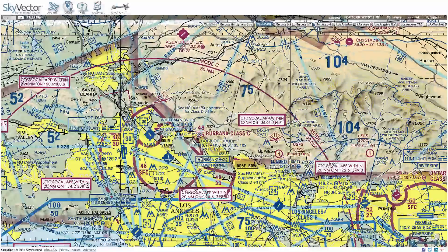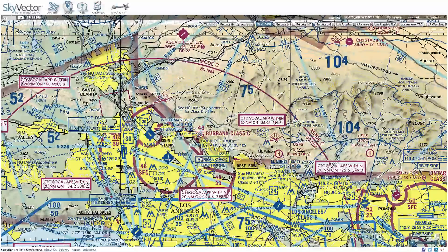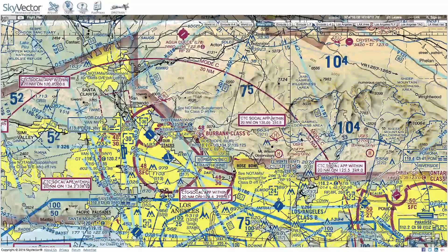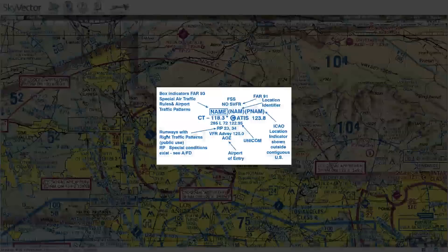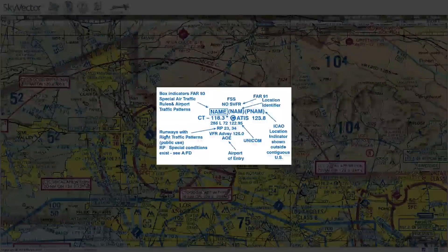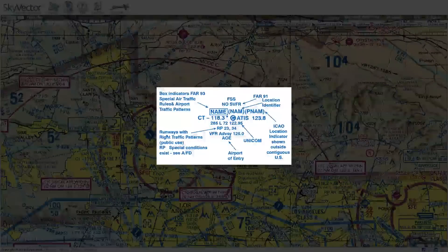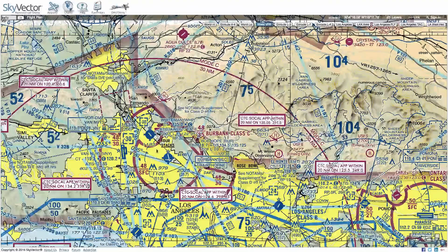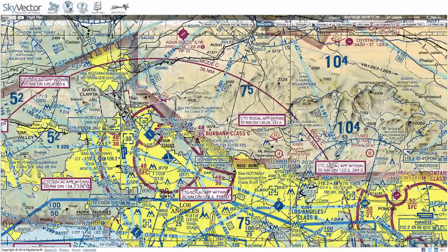One additional item — we do have another video on this — is radio frequency. These can be found on the sectional chart, and there's a legend in the testing supplement on how to read these radio frequencies. They can be found next to every airport.